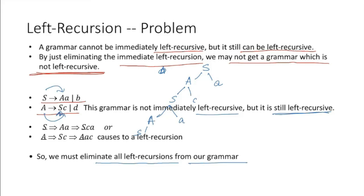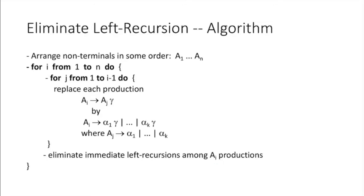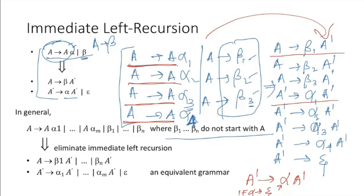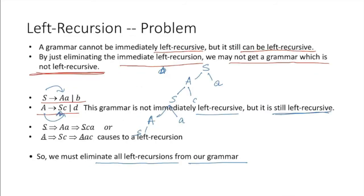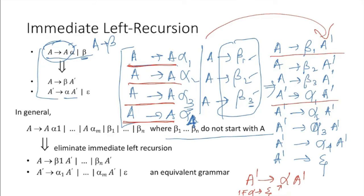So we must eliminate all left recursion from our grammar. Here is an algorithm for eliminating left recursion. We have two for loops. We replace production rules in the inner loop. Understanding this algorithm is not so important if you understood the previous parts — nobody is going to ask you this algorithm, but you have to understand this part for competitive exams like GATE.